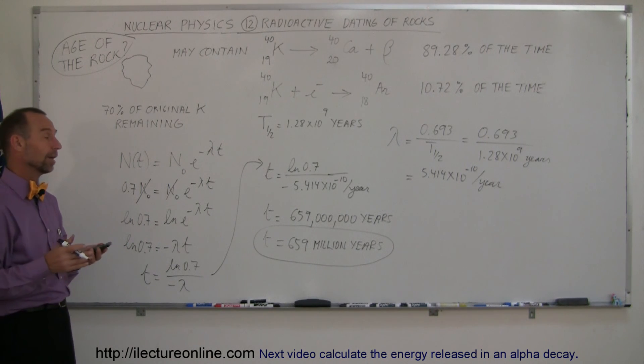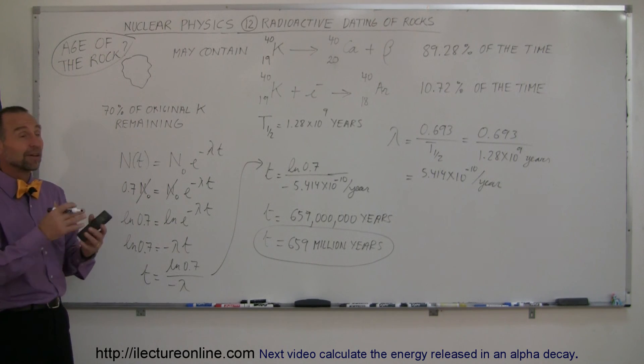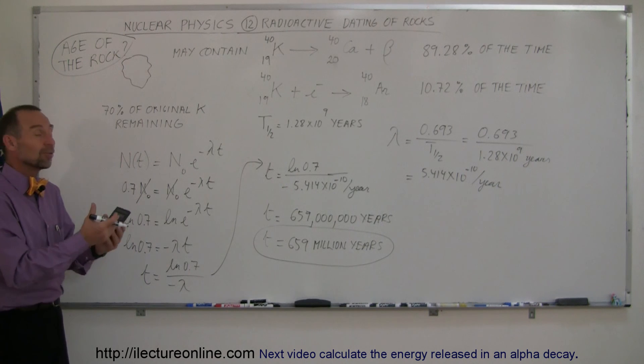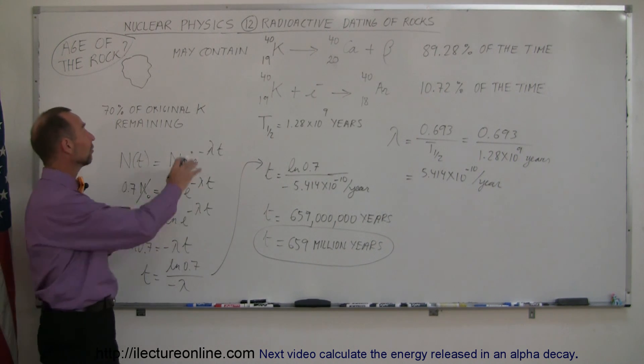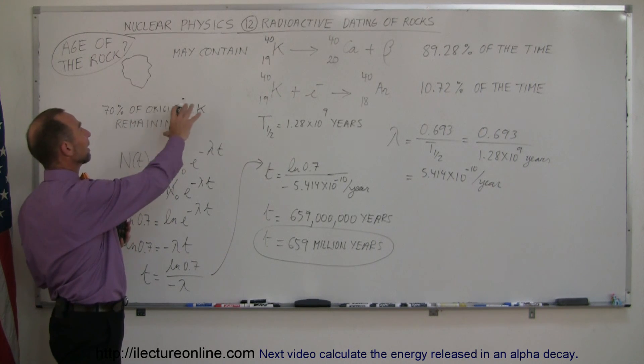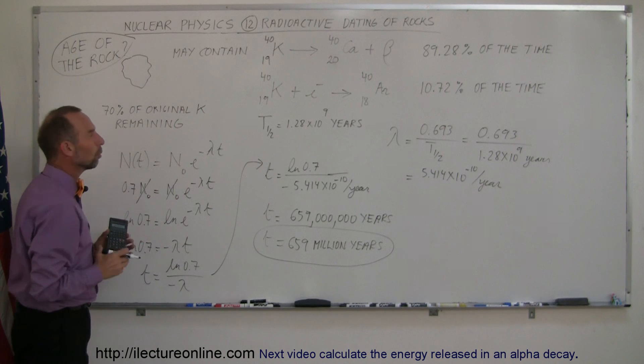So that's why, since carbon-14 only can date fossils out to maybe 40, 50,000 years max, and let's say we find a fossil of something that's hundreds of millions of years old, if we can find it embedded in a layer that contains rocks that contain potassium-40